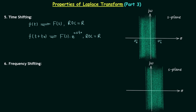For right shifting, if we have f(t − t₀), there is one single change in the Laplace transform: instead of a positive sign, we have a negative sign. So the Laplace transform becomes F(s) multiplied by e^(−st₀). This property is the time shifting property of the Laplace transform, and it is analogous to the time shifting property of the Fourier transform.